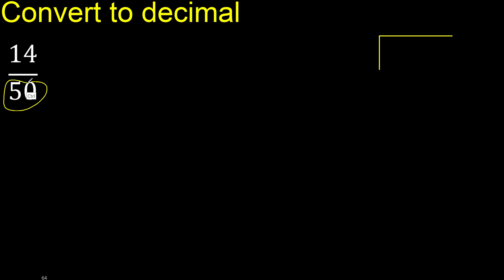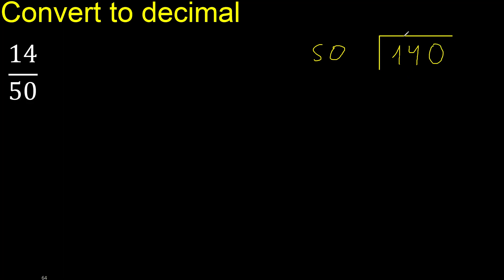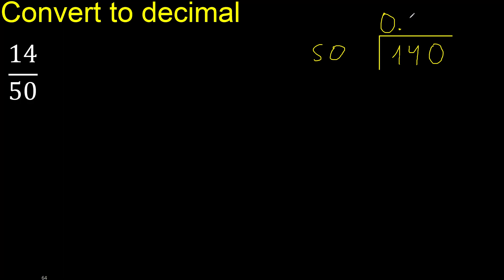14 divided by 50. 14 is less, therefore complete — always complete with 0. Here, 0 point. 50 multiplied by which number is nearest? 140, but not greater. Multiply by 3 is 150, which is greater. Therefore multiply by 2 is 100.